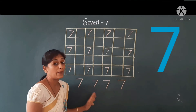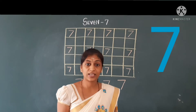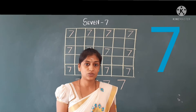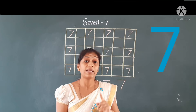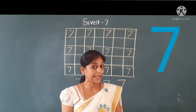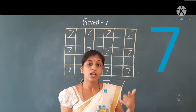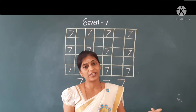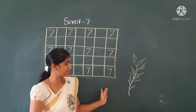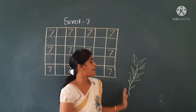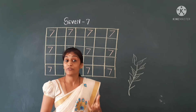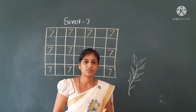Children, practice at home number 7, and also numbers 1 to 10. Now we will write in the textbook as well as in the notebook. So this is number 7. With that, this is a plant — so we will draw 7 fruits.